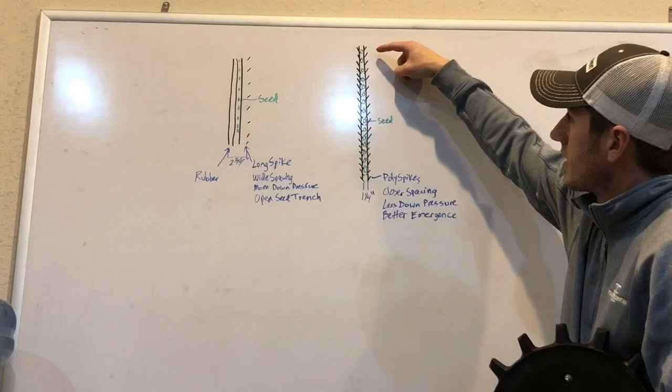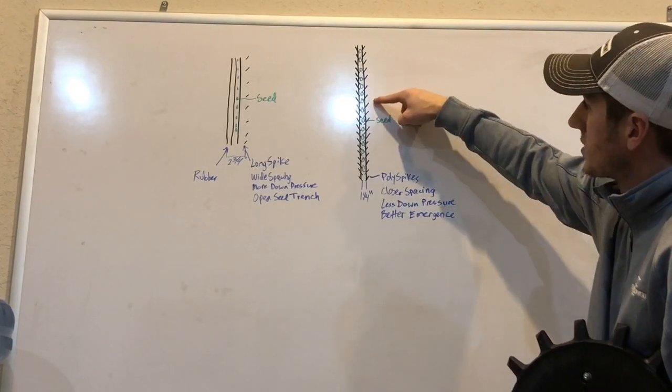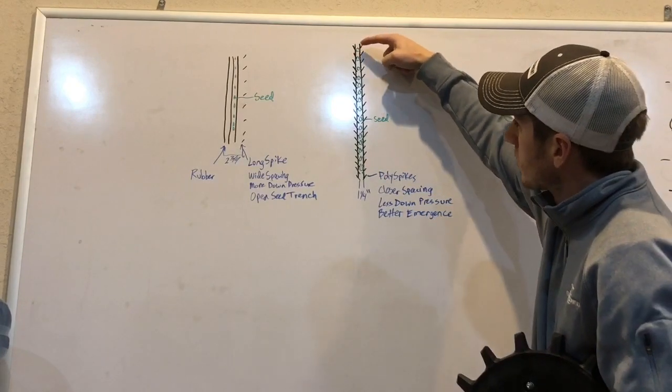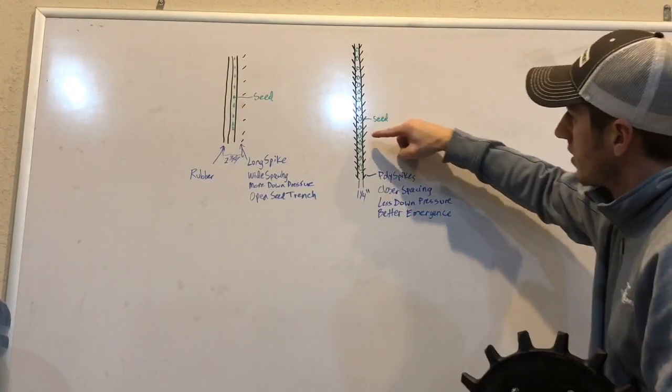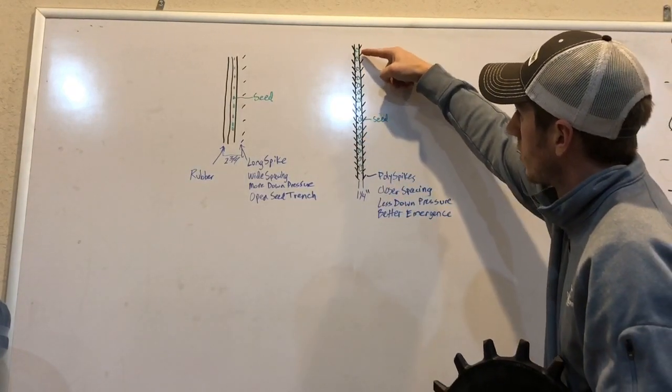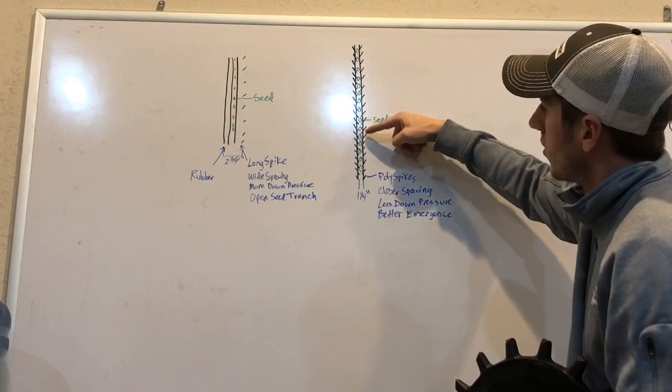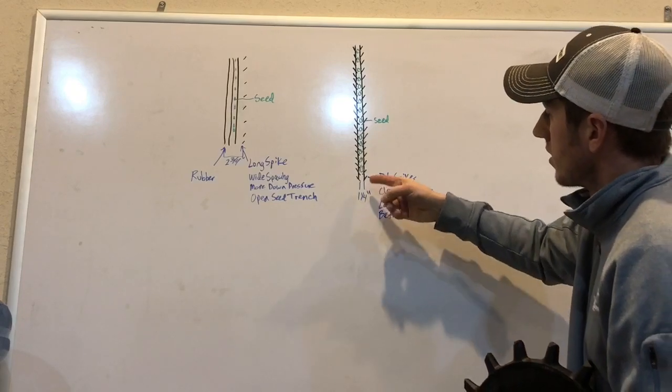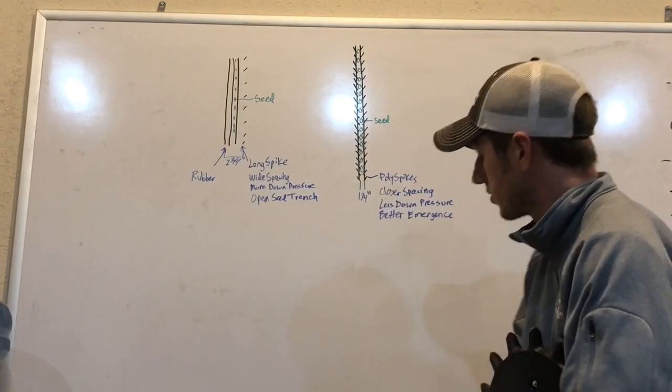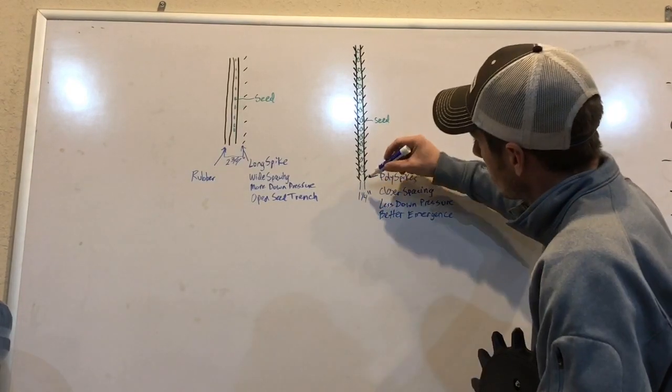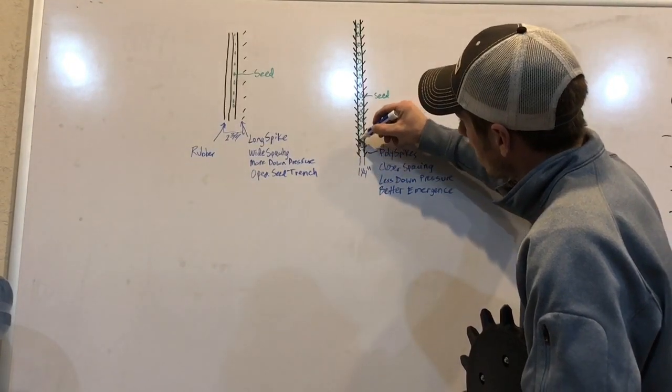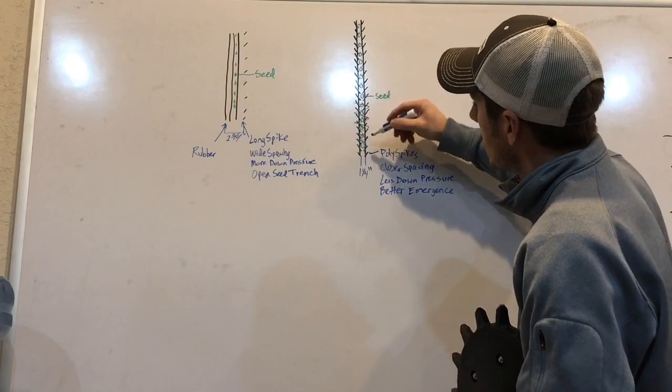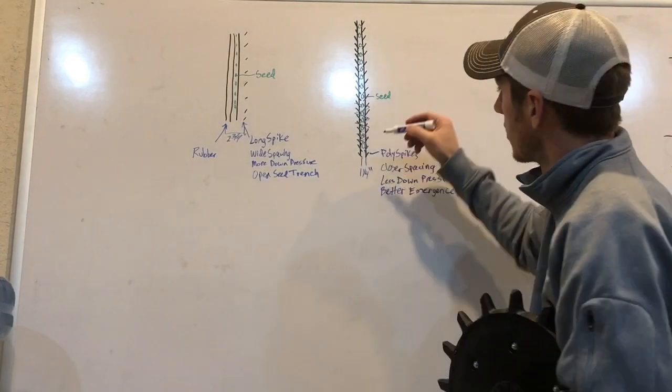If you look here, this is the poly spike closing wheels. I've got the seed here in the center, and these little notches are the closing wheels walking on each side of that furrow. Now, and it's because we're spaced in here at an inch and a quarter gap, the closing wheels are much closer, and whenever they run down the row, they are just walking on this edge, and it crumbles those sidewalls right in with very little down pressure.